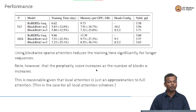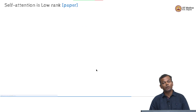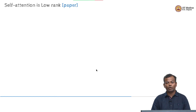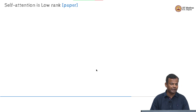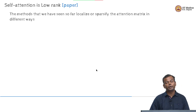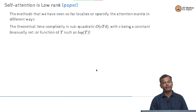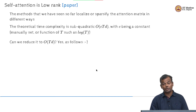Moving on from block attention, let us look at one more method for reducing the time complexity of the attention mechanism. This is based on the empirical observation that attention is low rank. So far we have been able to get the complexity down to subquadratic where C is a constant — can we reduce it to O(TD)? Can we get rid of the C also?